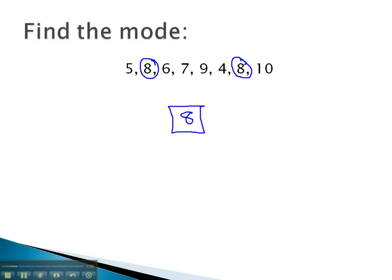Sometimes it helps to put the data in order to see the mode. 4, 5, 6, 7, 9... Whoops, I missed the 8's. 8, 8, 9, 10, and then we can see that the 8 is repeated in there. And that way, we're sure there's no other mode that we might have missed.